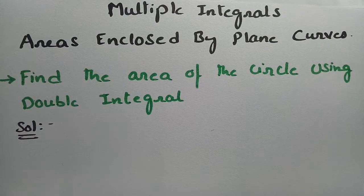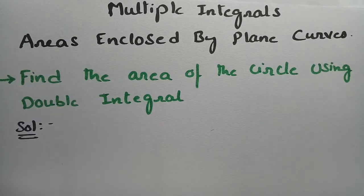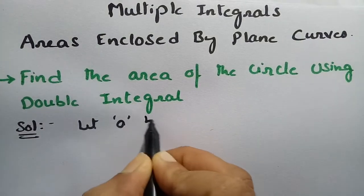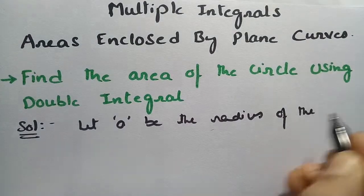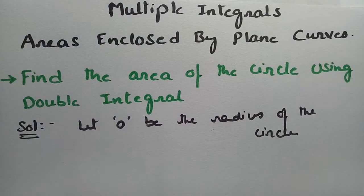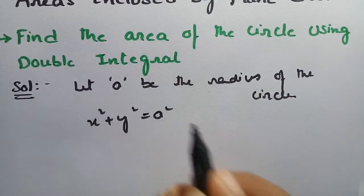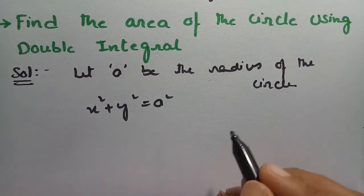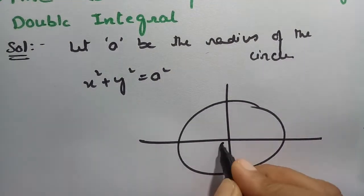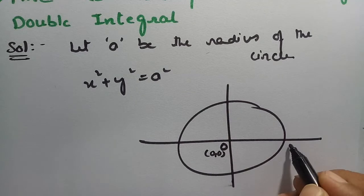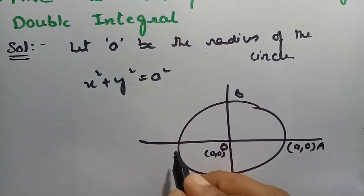This problem is about areas enclosed by plane curves. We have to find the area of a circle using double integrals. Let us consider a circle with radius a, so let small a be the radius. The equation is x² + y² = a², which is a circle with center at the origin (0,0) and radius a. Point a is at (a,0).